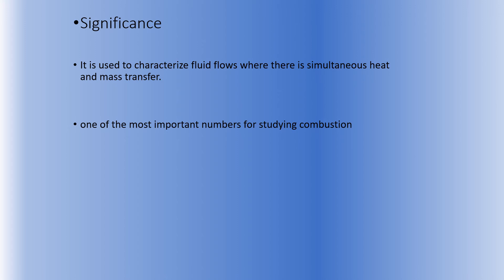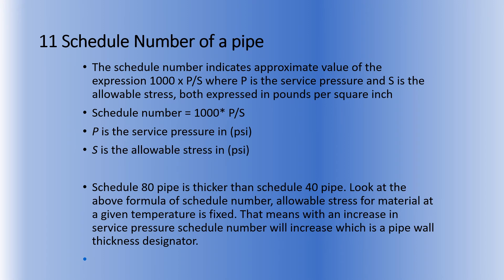The Lewis number is useful when we talk about simultaneous heat and mass transfer applications. Whenever heat and mass transfer are taking place at the same location and time, we use the Lewis number to determine how the system is behaving. Secondly, it is an important number for studying combustion phenomena.